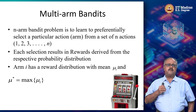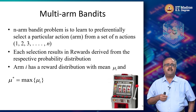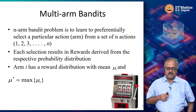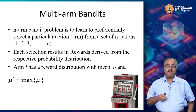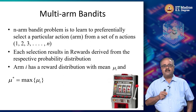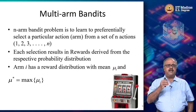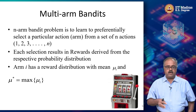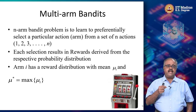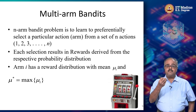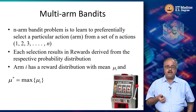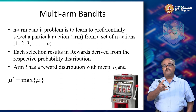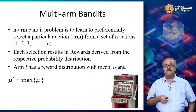Let us look a bit more formally at what the multi-arm bandit problem is. The multi-arm bandit problem, or the n-arm bandit problem, is a setting where you have n actions — sometimes called arms. You have n actions, we will call them 1 to n. Each action, when you select it, gives you some payoff, which we call a reward, drawn from some probability distribution.